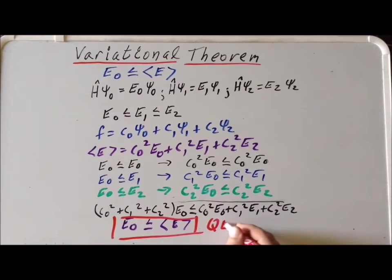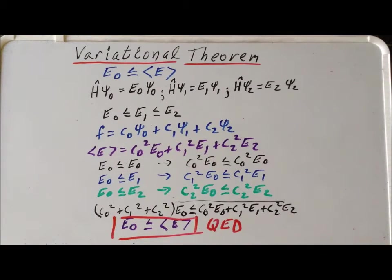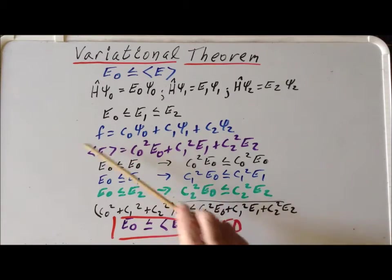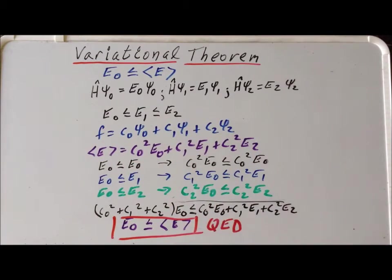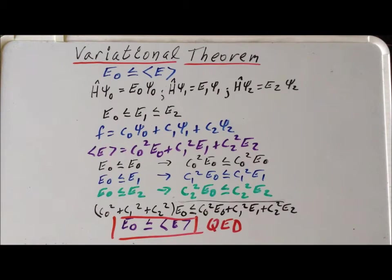So this proves the variational theorem true, so long as we assume we're writing a function with three and only three eigenfunctions. In the next video, we're going to prove the variational theorem for any number of eigenfunctions. Thank you very much for your attention. Have a good one.